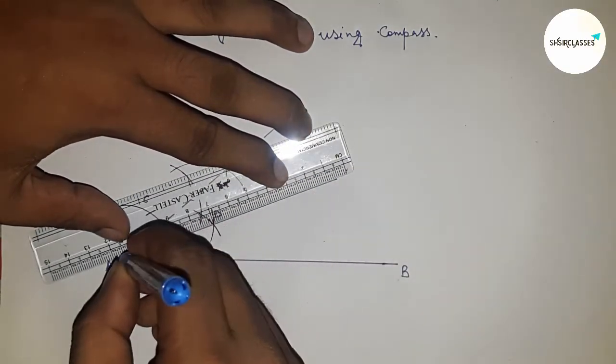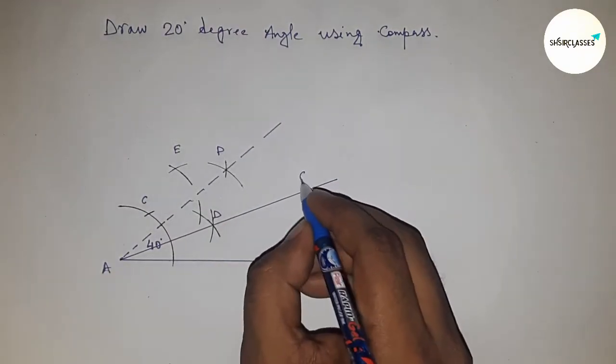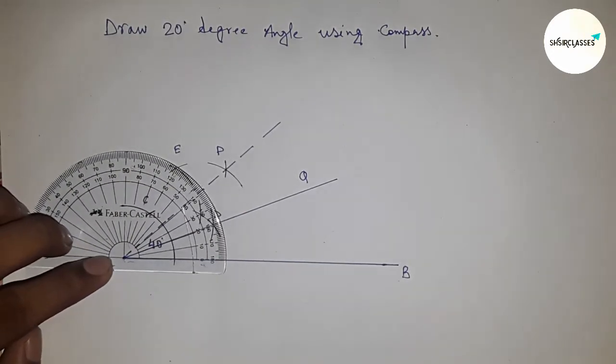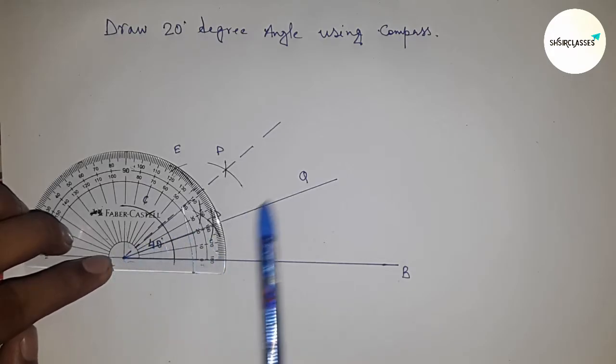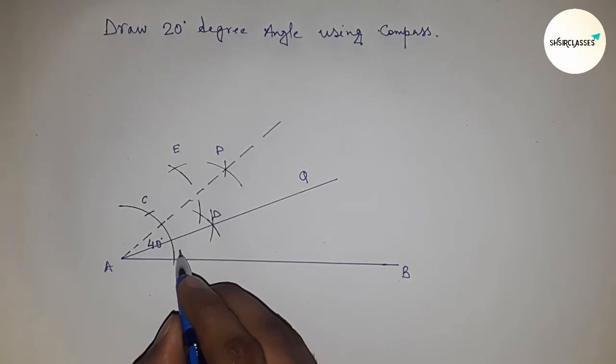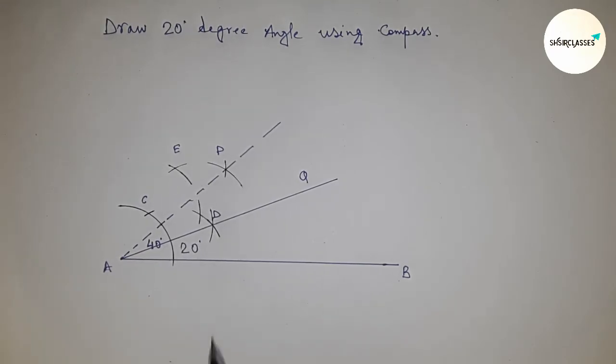So this is point Q. Now angle QAB, checking whether it is 20 degrees or not. So this is perfectly a 20-degree angle. Angle QAB equals 20 degrees. Therefore, angle QAB equals 20 degrees.